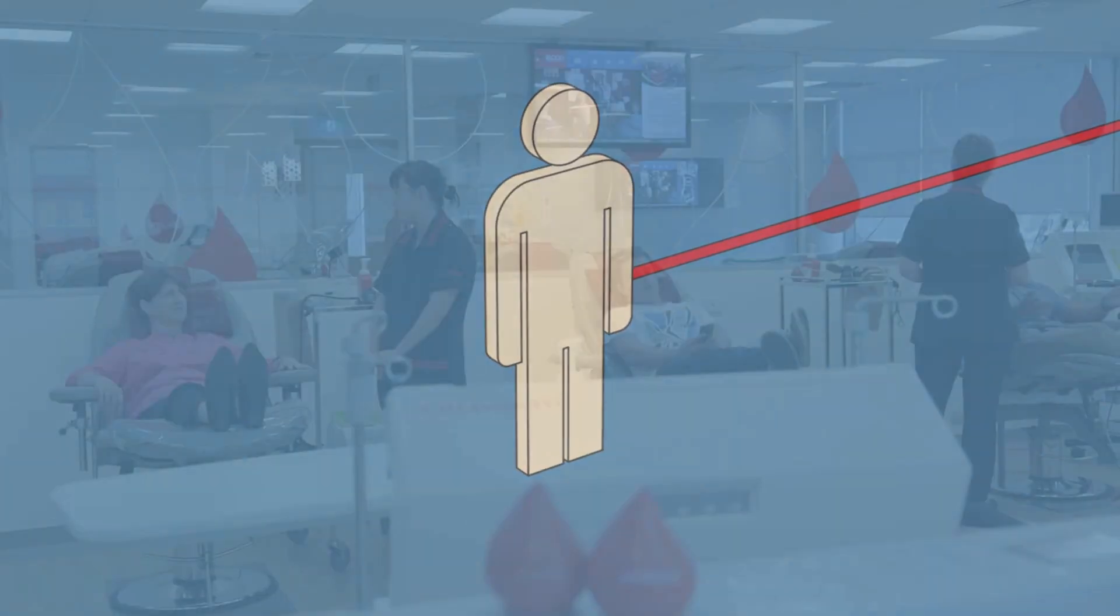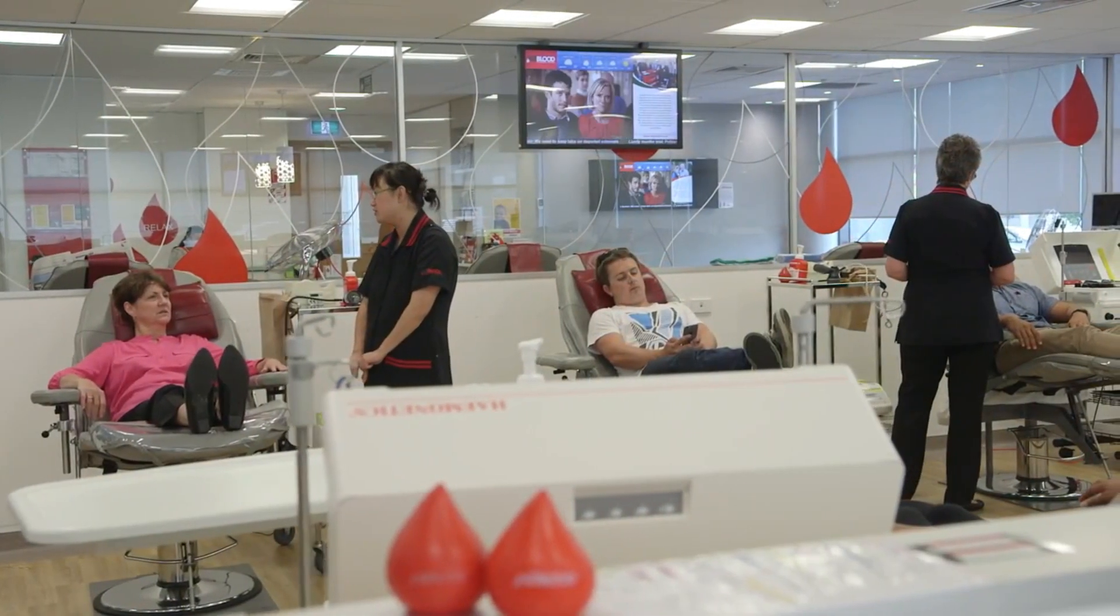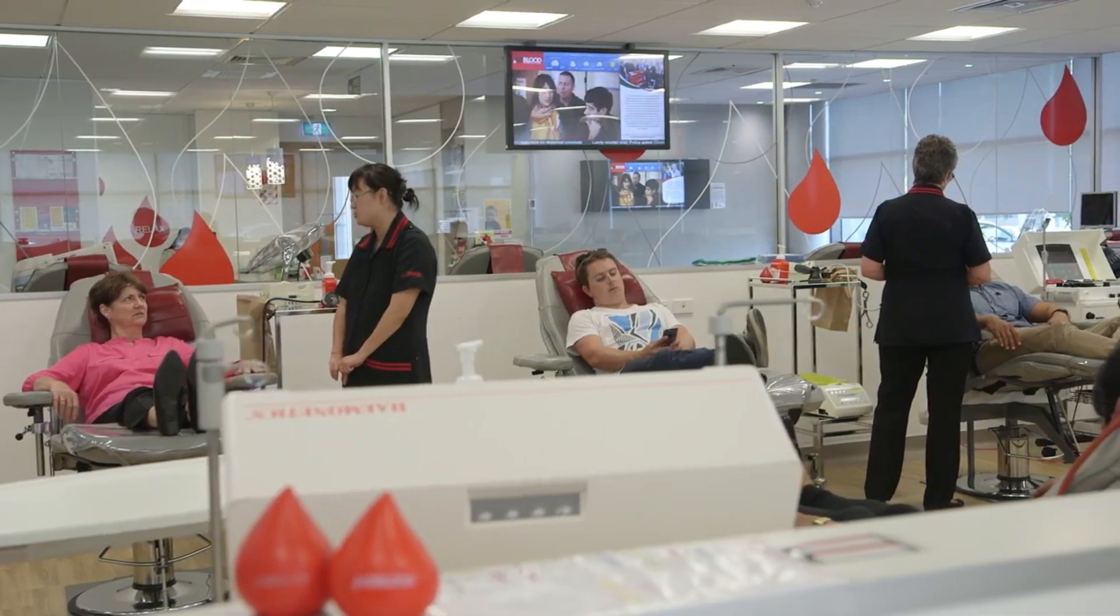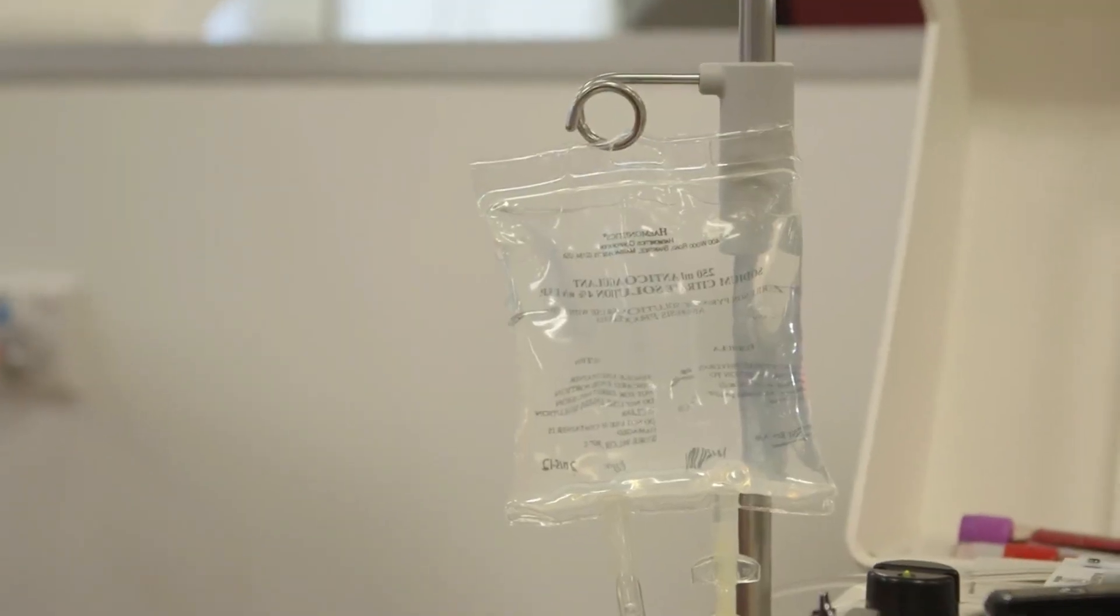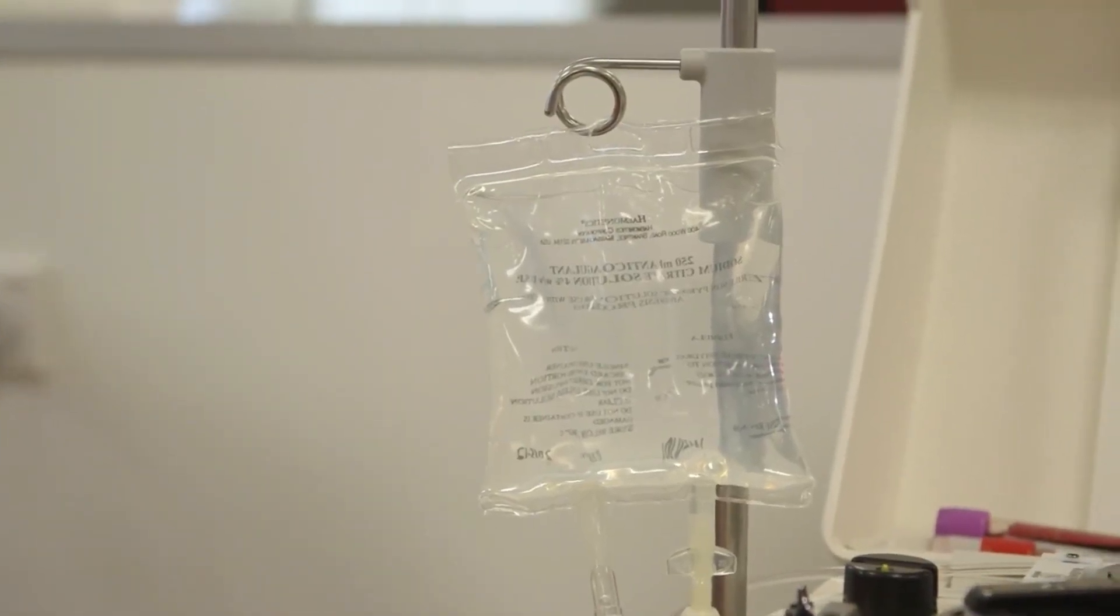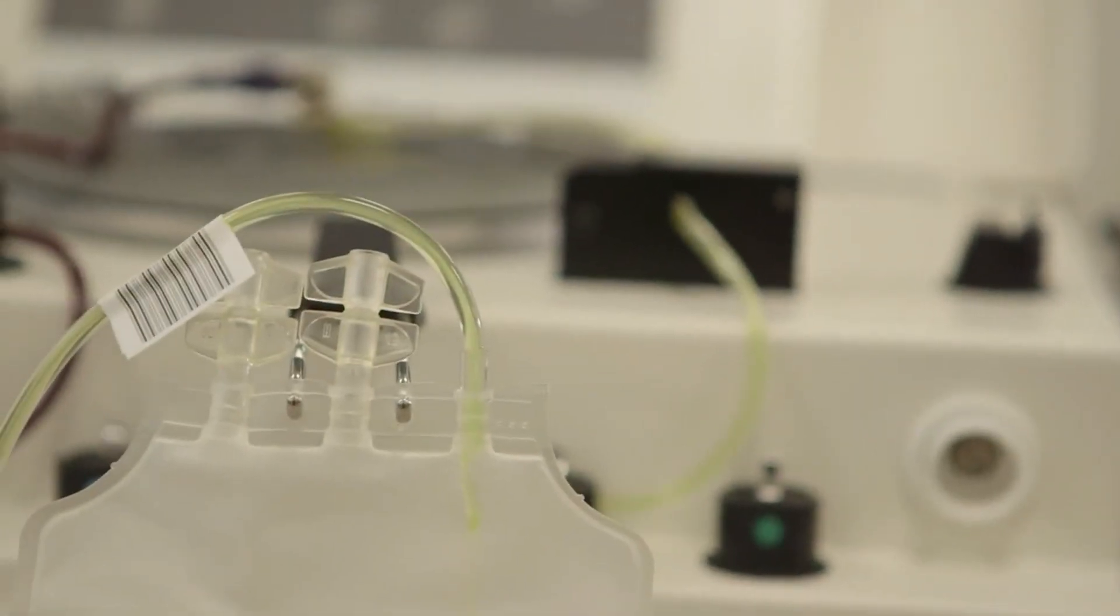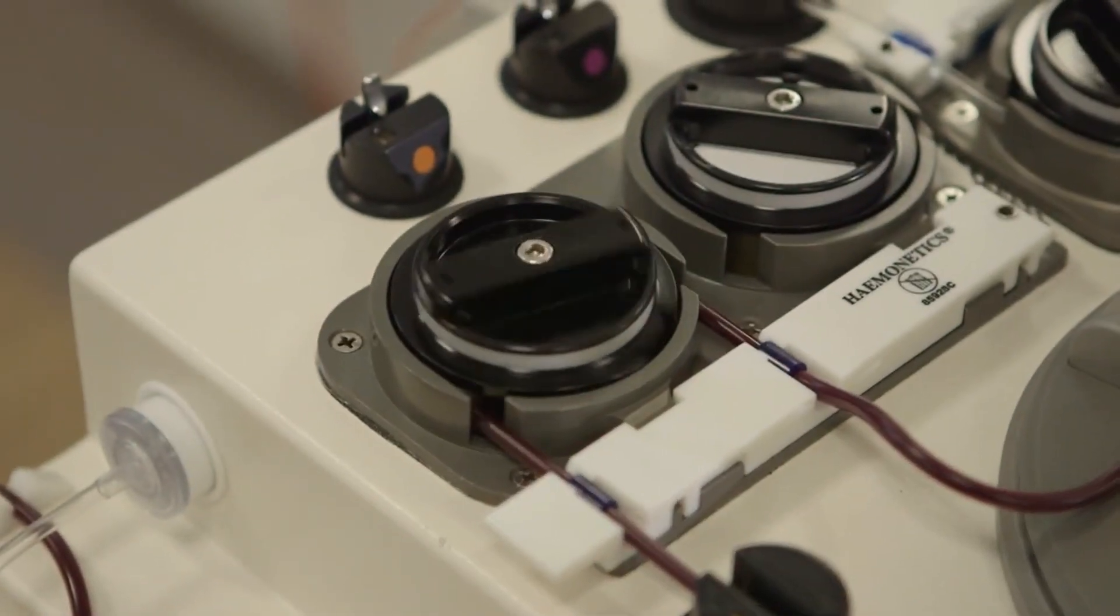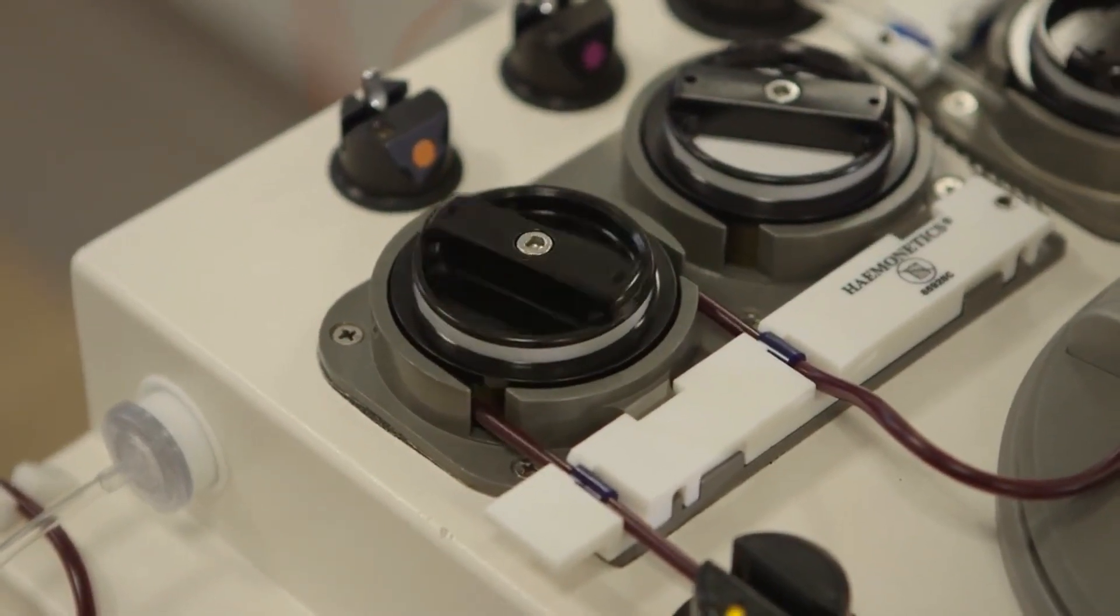The end product in most cases is the classic sedimented blood sample with the RBCs at the bottom, the buffy coat of platelets and WBCs, lymphocytes and granulocytes, PMNs, basophils, eosinophils, monocytes in the middle, and the plasma on top.